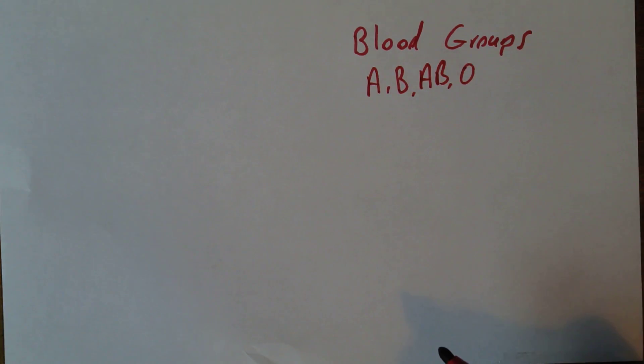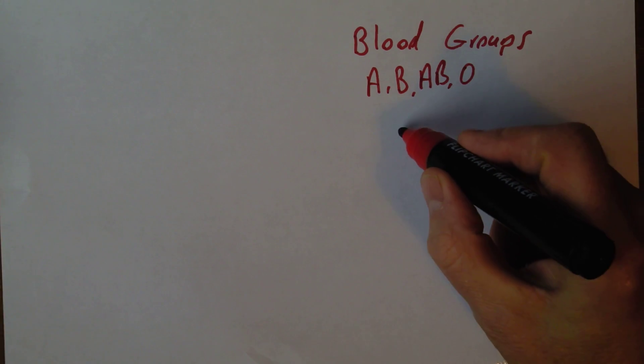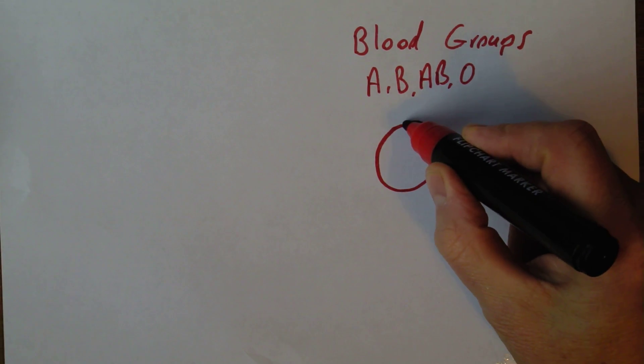This is the ABO system, and the group is determined by the nature of the antigens on the surface of the red cell.